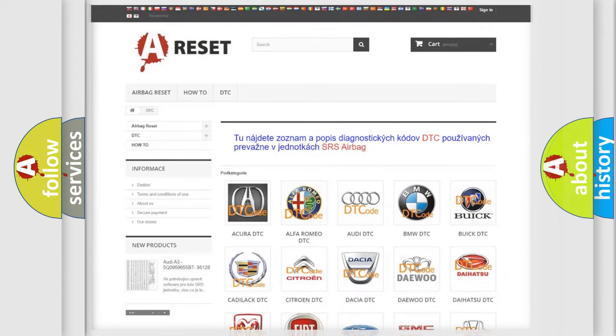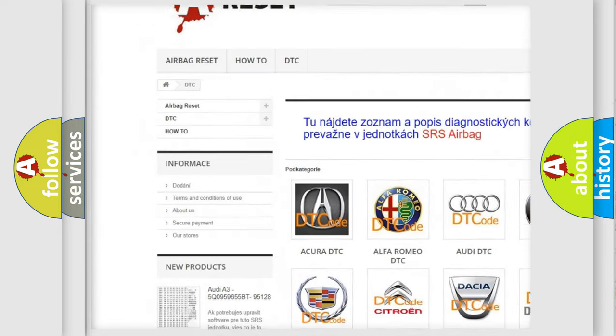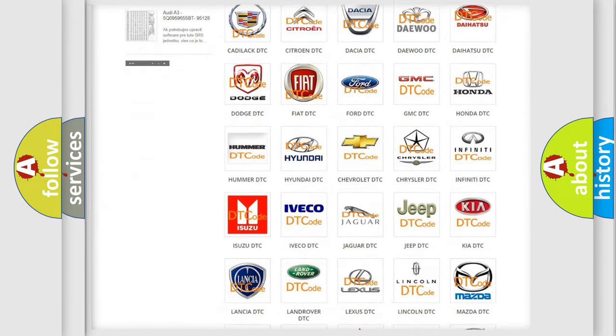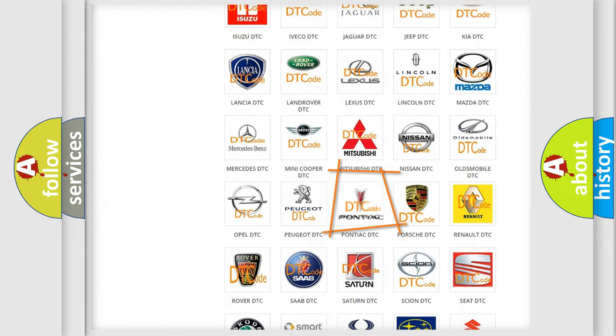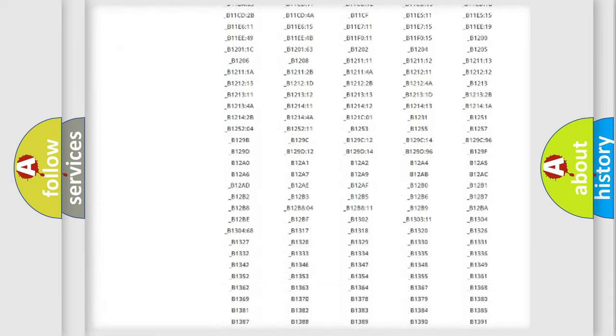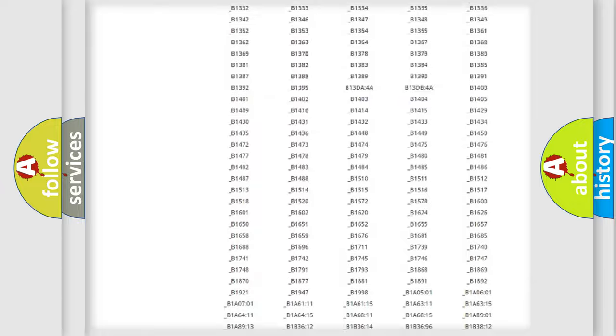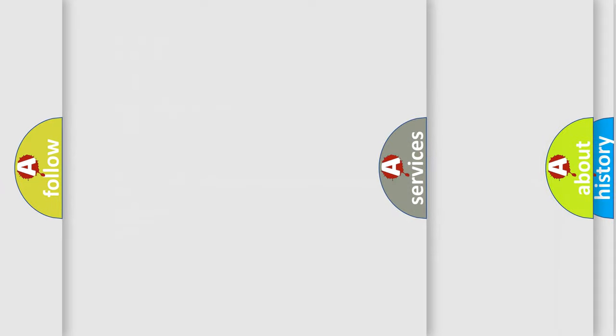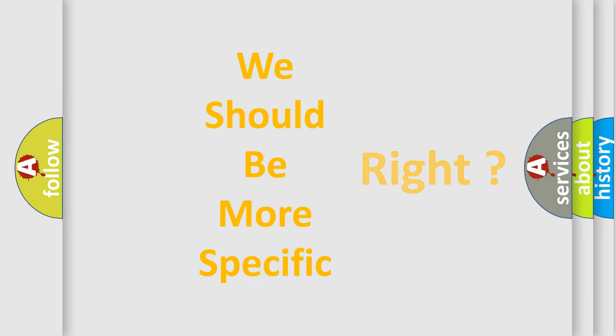Our website airbagreset.sk produces useful videos for you. You do not have to go through the OBD2 protocol anymore to know how to troubleshoot any car breakdown. You will find all the diagnostic codes that can be diagnosed in Pontiac vehicles, and many other useful things. The following demonstration will help you look into the world of software for car control units.